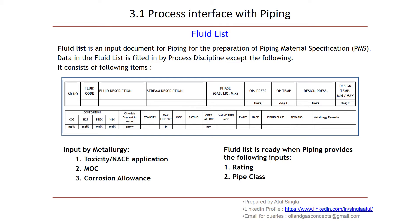In the fluid list, a few inputs are given by the metallurgy team: toxicity, NACE application, material of construction, and frozen allowance. These three inputs are given by metallurgy and become part of the fluid list. The fluid list is complete when piping provides the following input: once we add the piping input into this fluid list, it becomes a complete fluid list which is used for design activities.